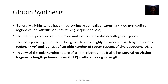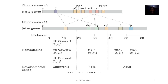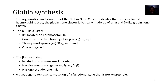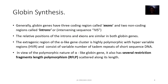Generally, globin genes have three coding regions called exons and two non-coding regions called introns. The relative positions of introns and exons are similar in both globin genes. The extragenic region of the alpha-like gene cluster is highly polymorphic with hypervariable regions and consists of variable numbers of tandem repeats of short-sequence DNAs. It also has several restriction fragment-length polymorphisms scattered along its length.